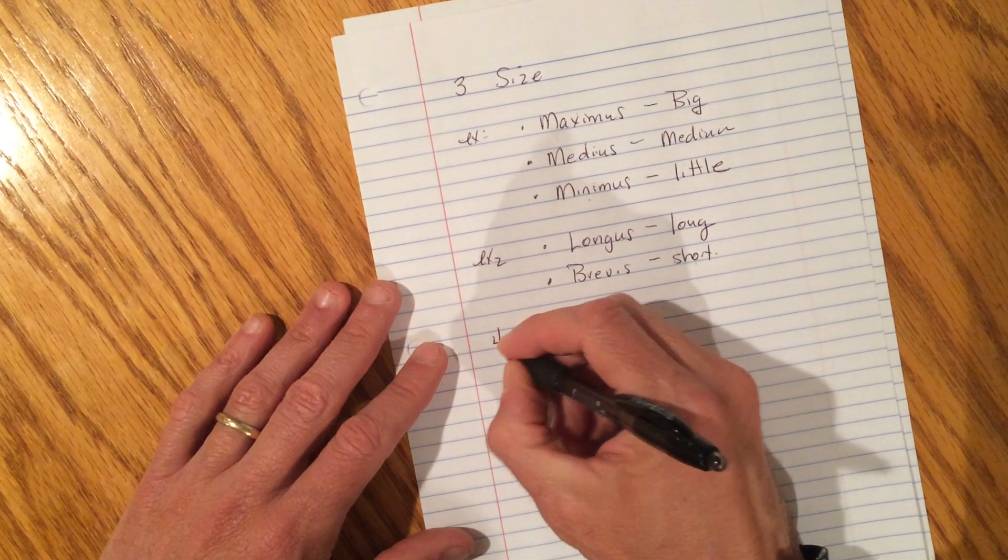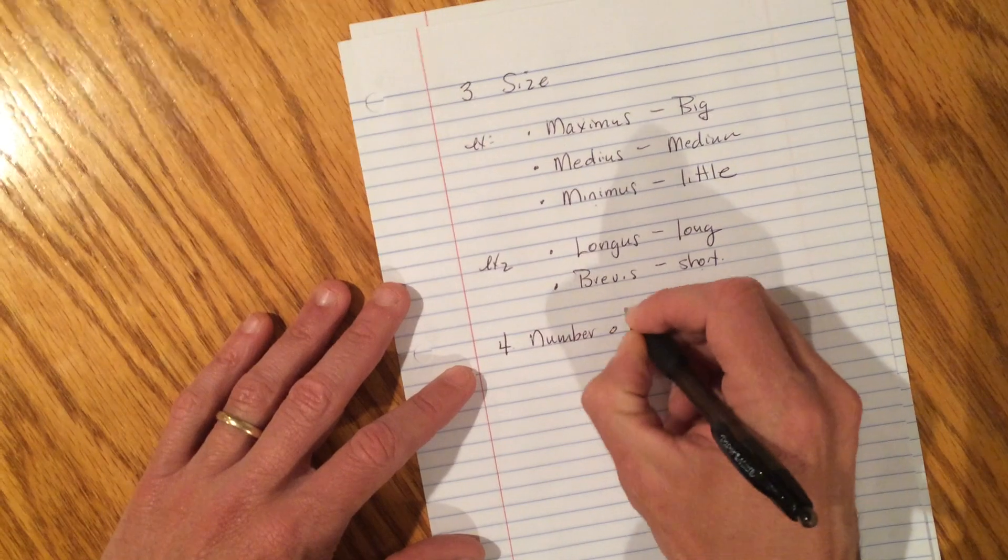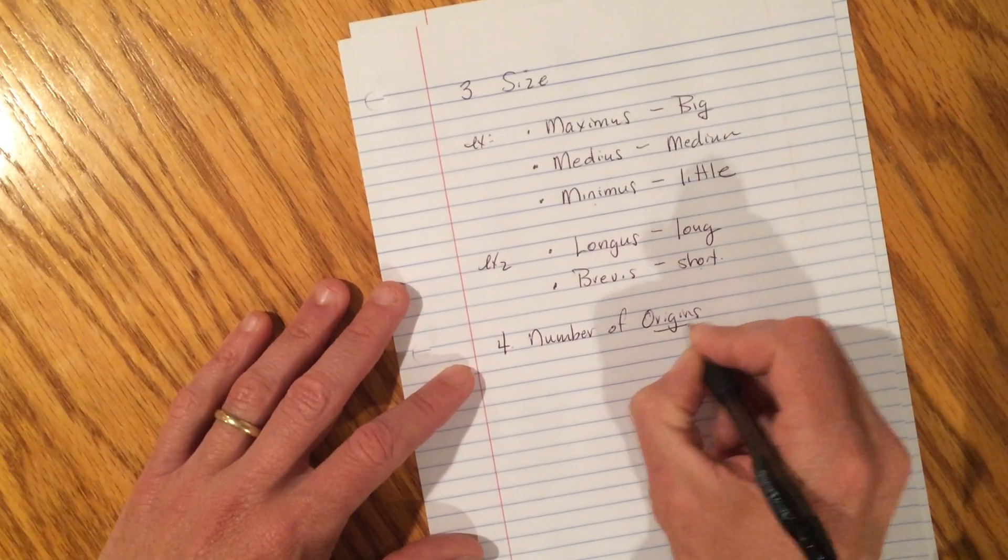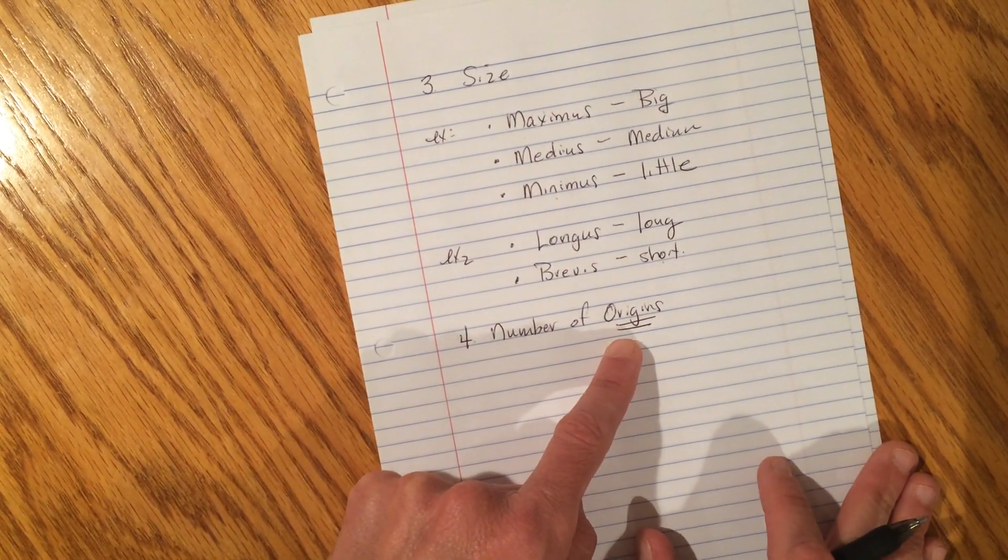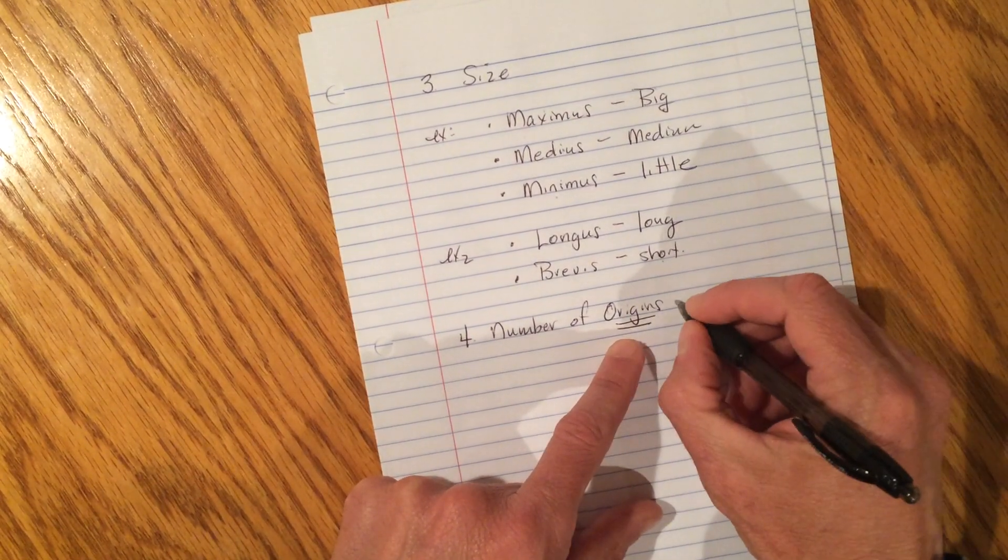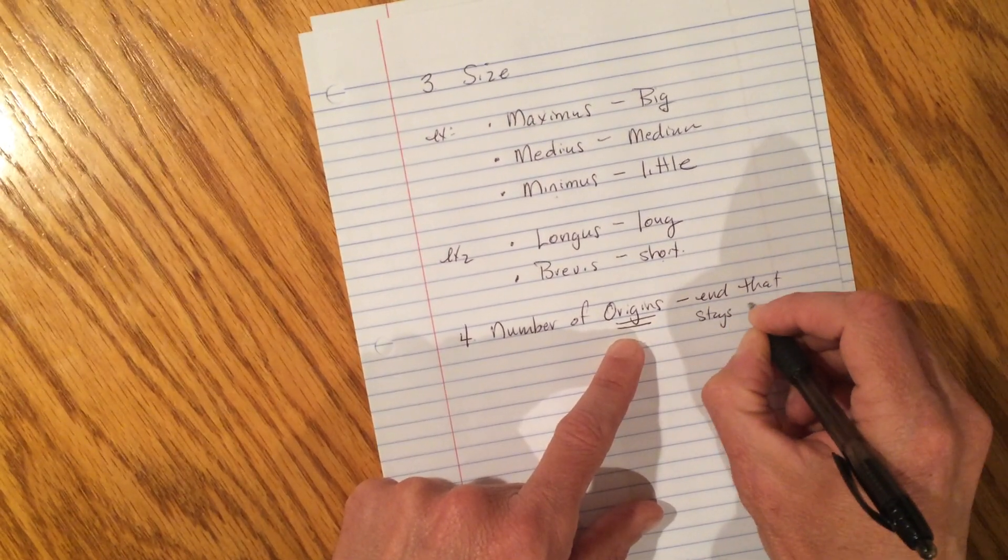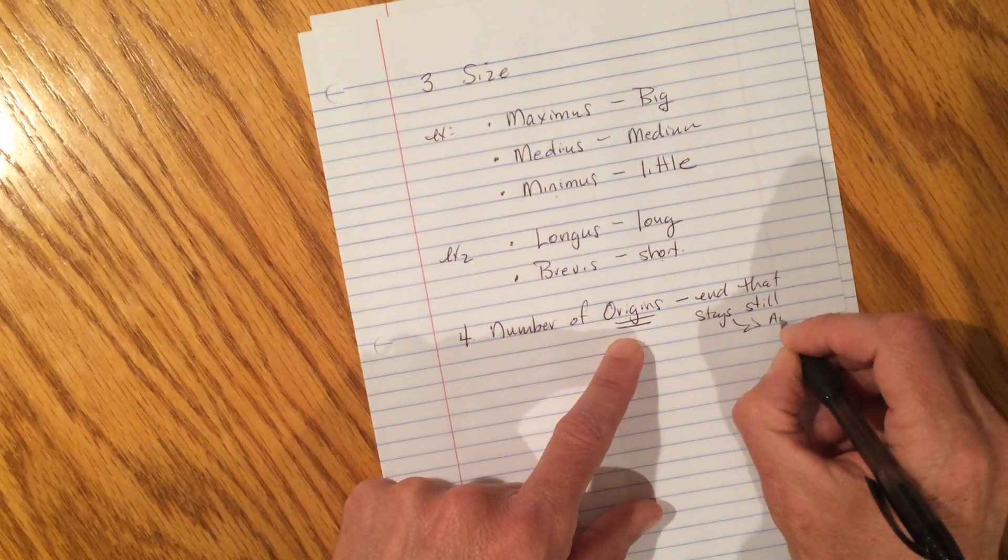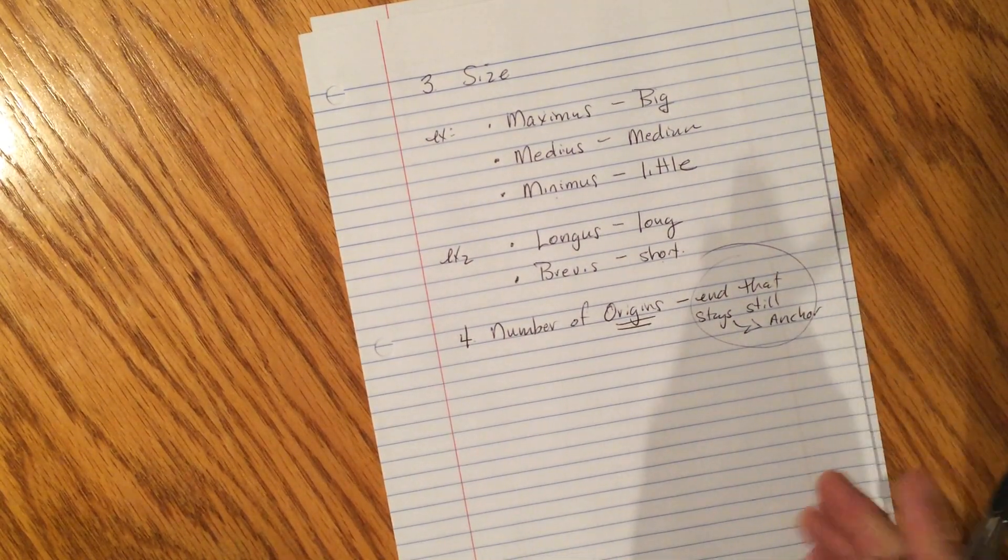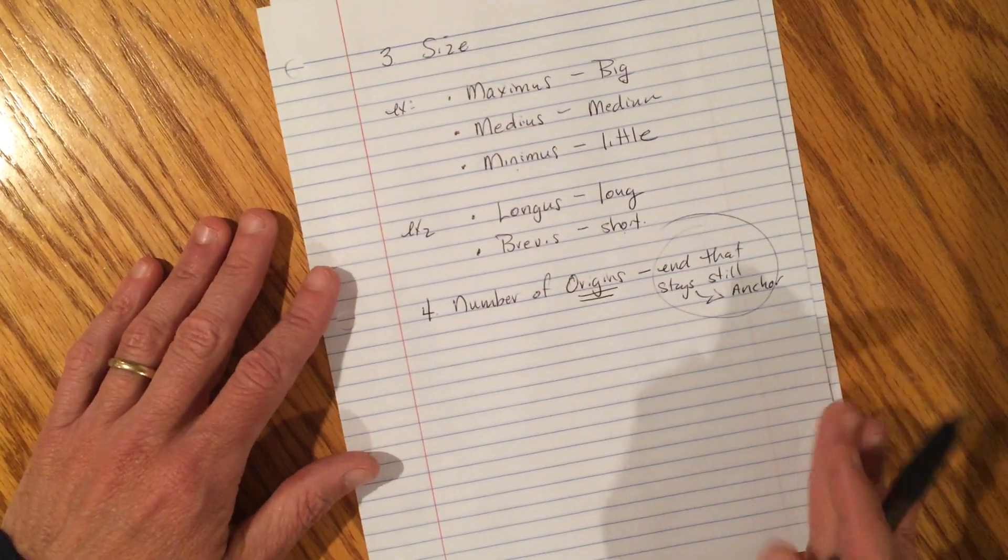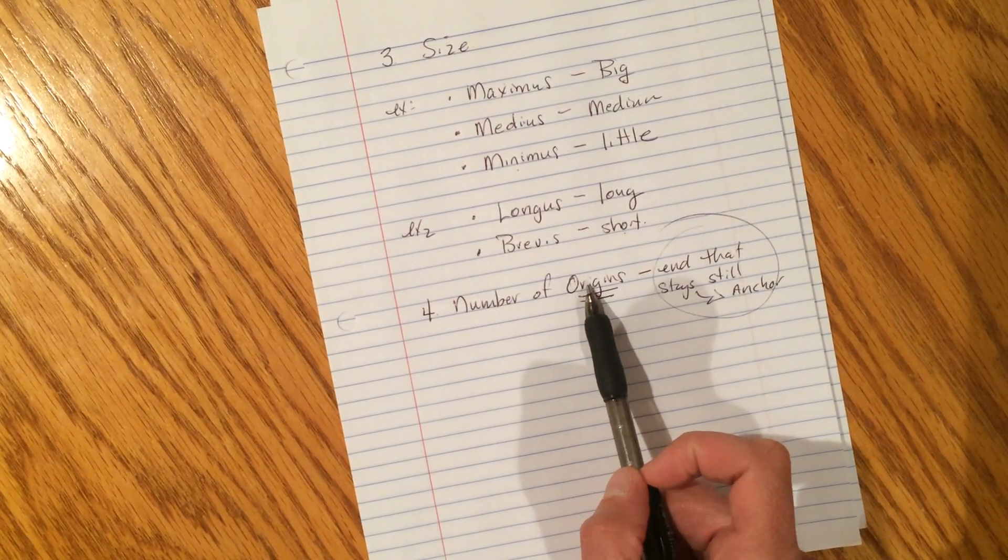Okay. Number four. Another common way in which muscles are named are the number of origins. Now, everybody has to go back in their notes and tell me what the origin is. Origin. Origin. Oh, I remember. That's the end that stays still and acts as what? An anchor. Now, that's already in your notes. You don't have to write that again if you don't want to. But I just want to have it there as a reference point while we talk about these ones.